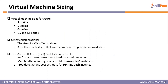Azure machines are offered in different groups and sizes based on compute resources. The A series is for simple production workloads and is not memory-intensive. The D series has faster processors and solid-state drives, best suited for applications requiring higher performance. The G series provides the highest level of compute resources in Azure and is designed for heavy workloads.